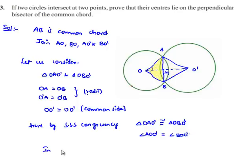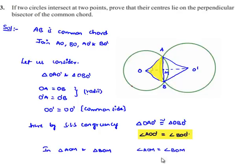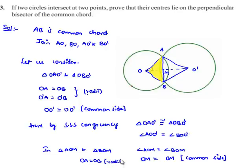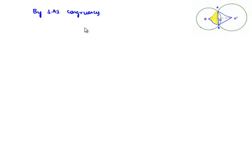Now let us consider another set of triangles: triangle AOM and triangle BOM. In these two triangles, angle AOM is equal to angle BOM, as proved above. OM is equal to OM since it is a common side, and OA is equal to OB since they are radii of the circle with center O. Therefore, by the SAS property, we can say both triangles are congruent — that is, triangle AOM is congruent to triangle BOM.